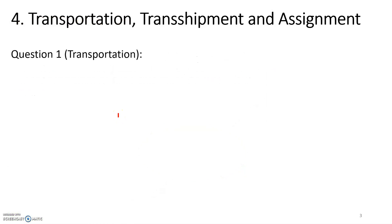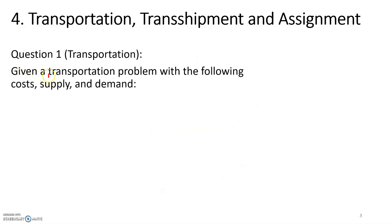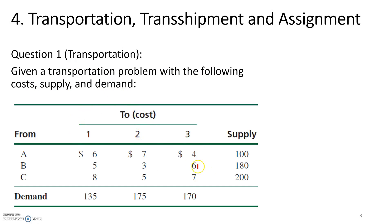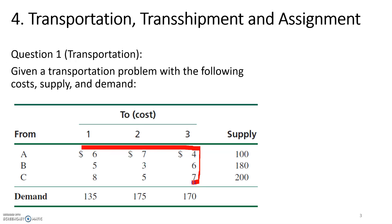As an example, we have a question: given a transportation problem with the following cost, supply, and demand. In this table we have three sources — A, B, and C — and three destinations — 1, 2, and 3. To transport one unit from A to 1, the cost is $6. To transport one unit from A to 2, the cost is $7, and so on. These nine values represent the cost matrix — the cost of transporting one unit from each source to each destination.